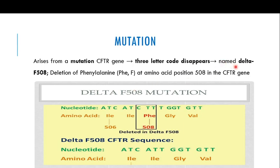This mutation is written as delta F508 — delta meaning deletion, F being the single-letter code for phenylalanine, and 508 indicating the position of the amino acid that is deleted. So at position number 508, normally there is a phenylalanine, but in cystic fibrosis that phenylalanine has been deleted, thereby coding for an abnormal CFTR protein. That abnormal CFTR protein does not allow the movement of chloride ions from inside the cell to outside to attract water towards the mucus and keep it thin.